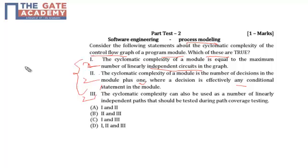So all these statements 1, 2, and 3 are properties of cyclomatic complexity of control flow graph. That's why all these three are true, so the correct option of this question is D. Thank you.